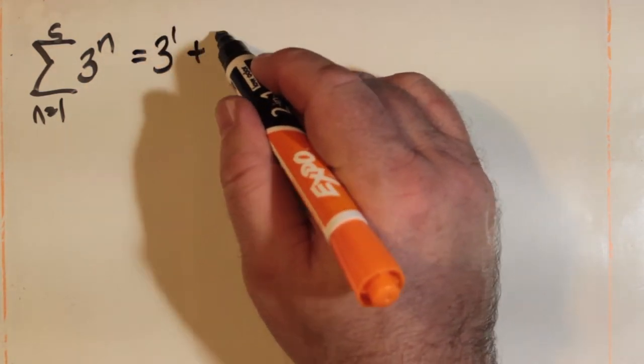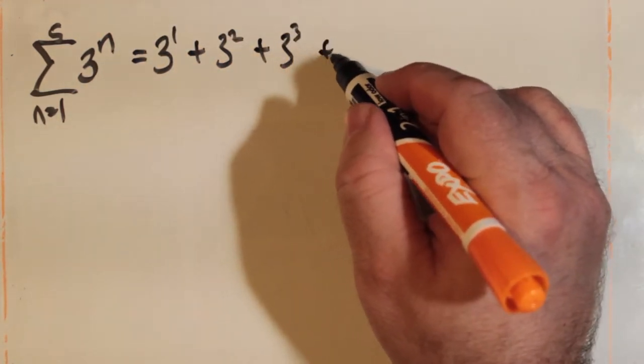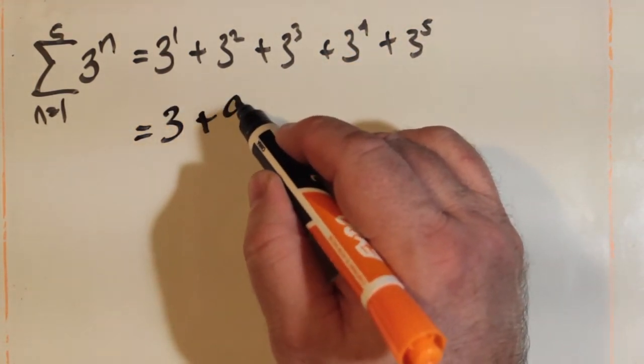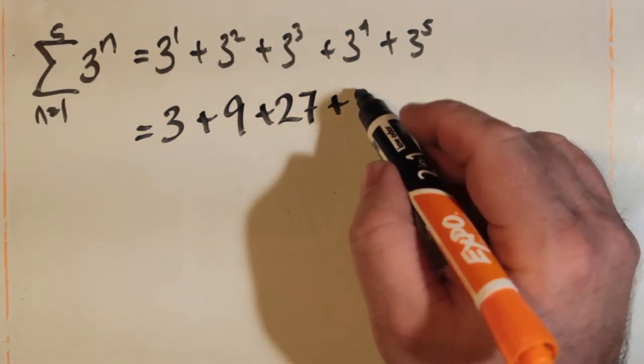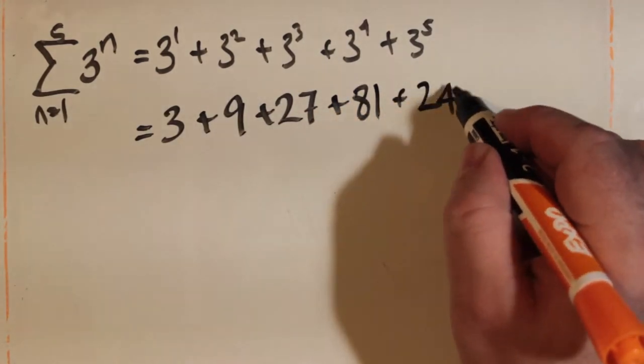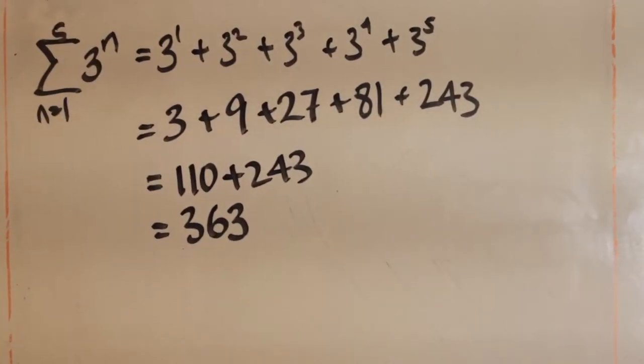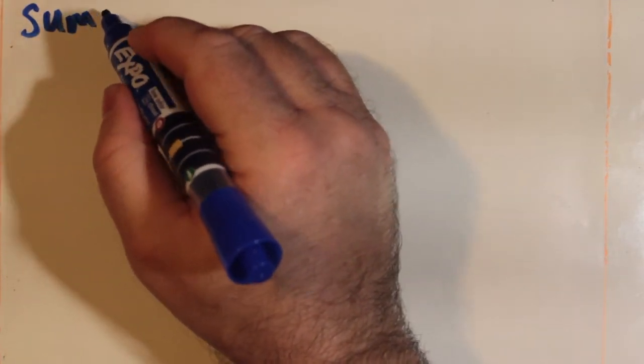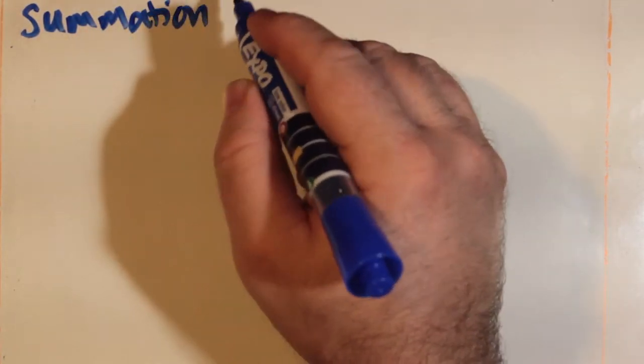Let's try something else. How about exponents? Once again, we're just replacing exponents. If the exponent is n, then we just replace the exponents going from the lower limit to the upper limit and you get 3 plus 9 plus 27 plus 81 plus 243.